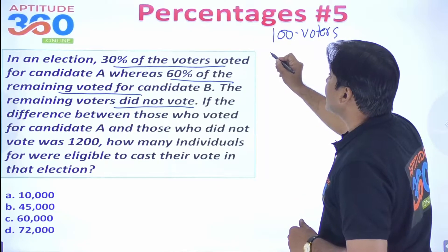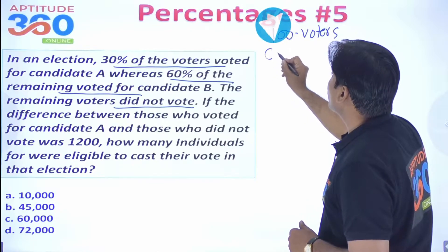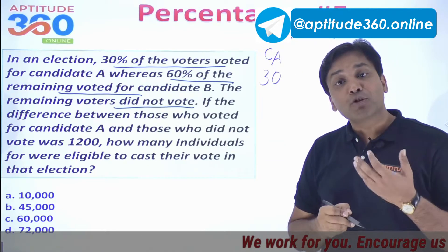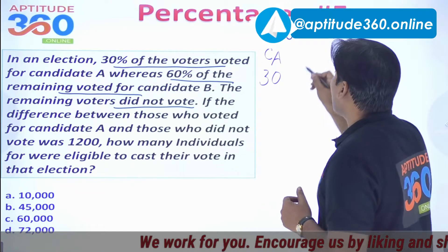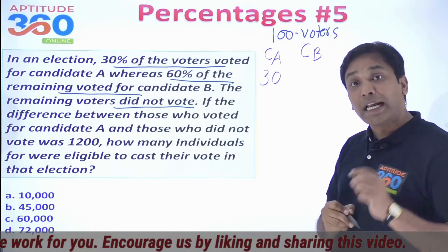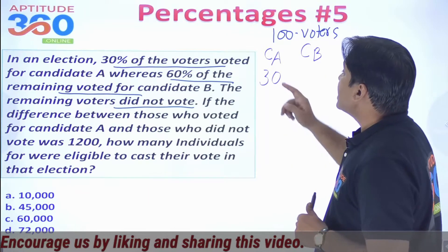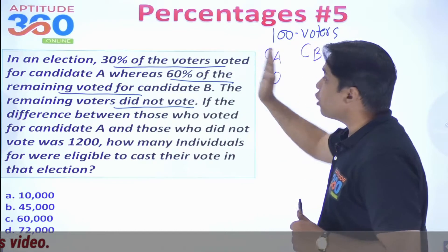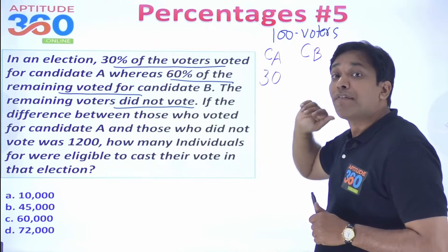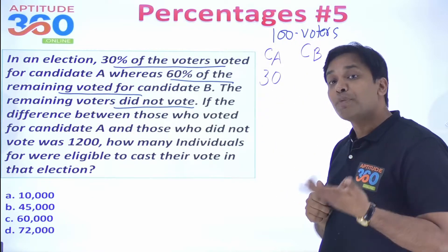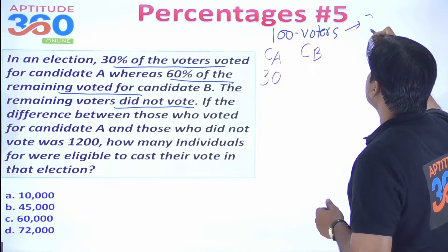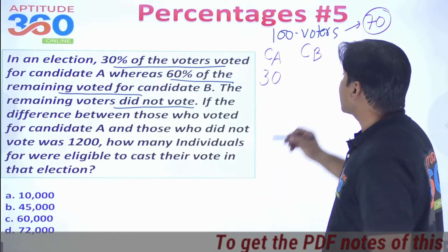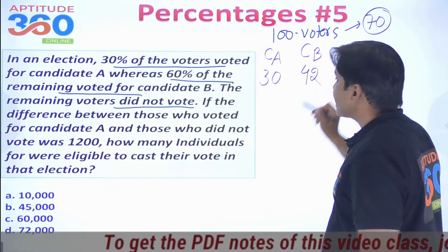With 100 voters, candidate A gets 30% of 100, which is 30 votes. The remaining 70 voters are left. Candidate B gets 60% of those 70, which is 42 votes. The rest did not vote.